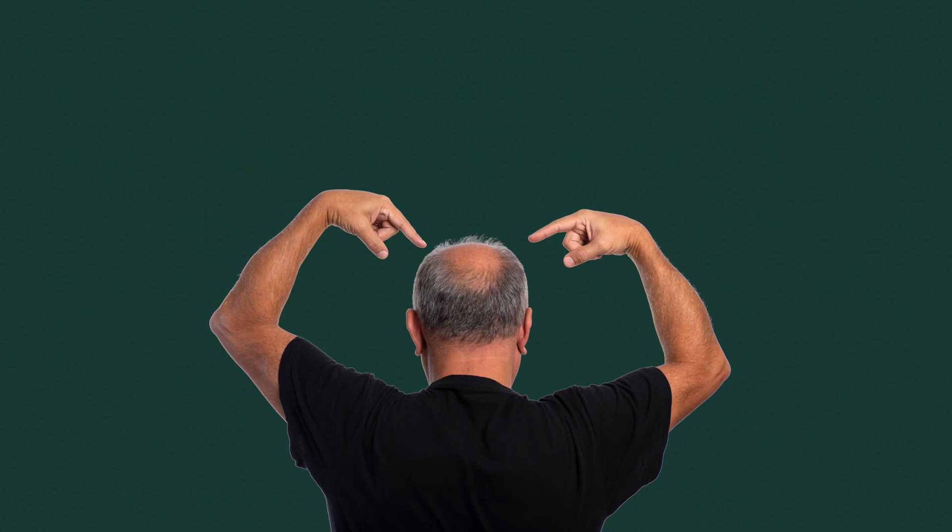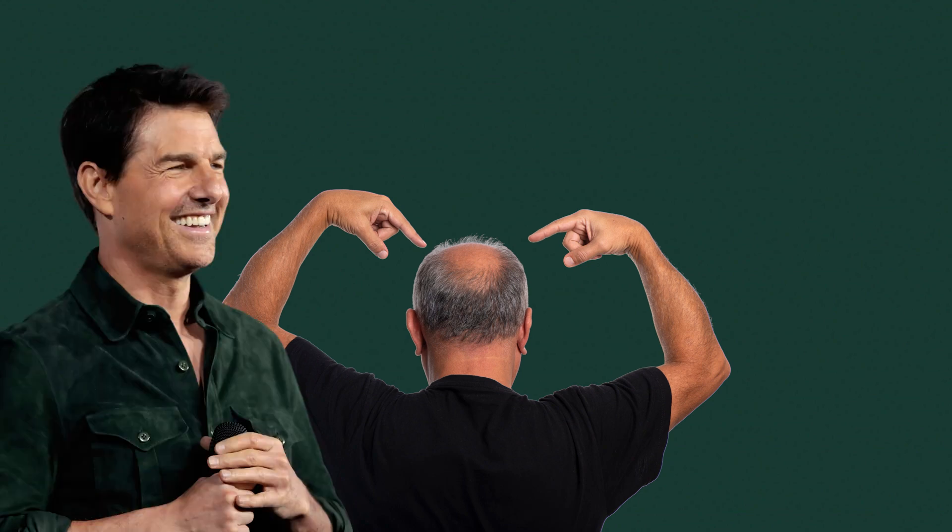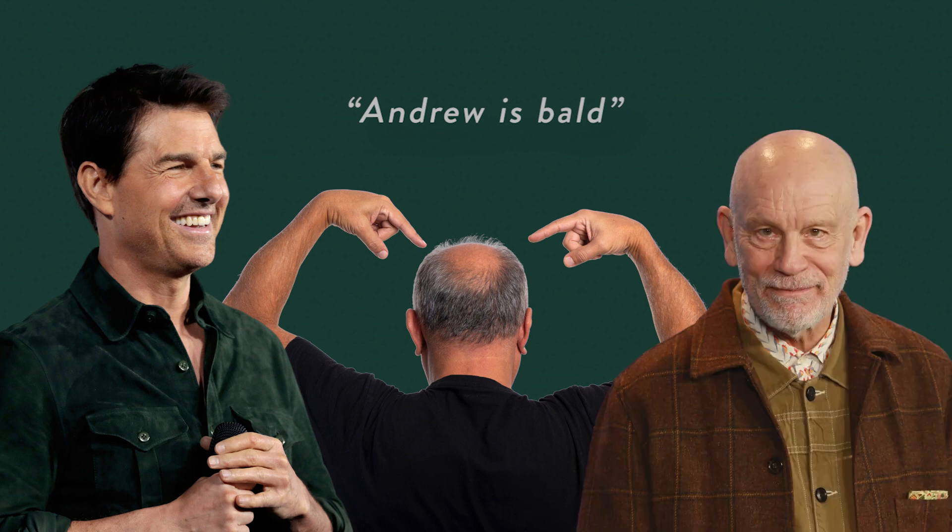For variety let's look at the word bald as it occurs in the following slightly silly context. My friend Andrew has a receding hairline. He has not lost all of his hair but he has lost quite a bit of it. If Andrew found himself in a room with Tom Cruise who has a full head of hair, the sentence 'Andrew is bald' would appear true, but if he found himself in a room with John Malkovich who is completely bald, it would appear false. Why is the same sentence true in the first case but false in the second?